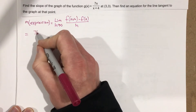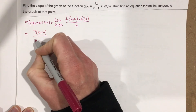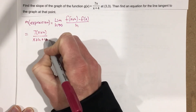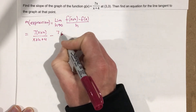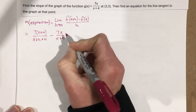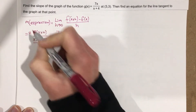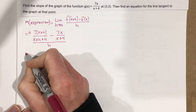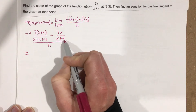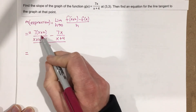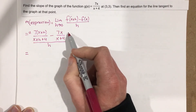We start with 7 times the quantity x plus h, over x plus h plus 4, minus f of x which is 7x over x plus 4, and that's over h. Now let's find a common denominator. This left fraction has x plus h plus 4 in it, and this right fraction has x plus 4 in it. We need to multiply the left fraction by x plus 4 over x plus 4, and the right one by x plus h plus 4 over x plus h plus 4.